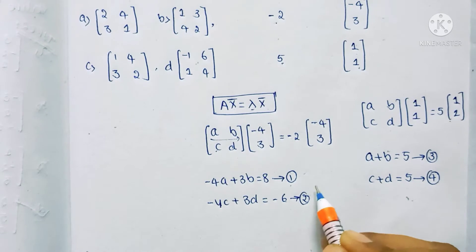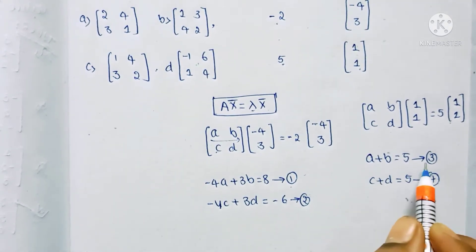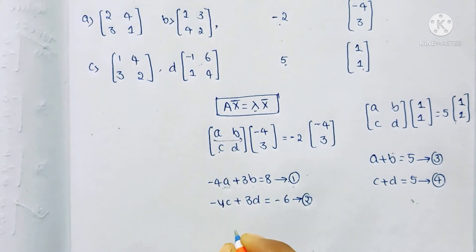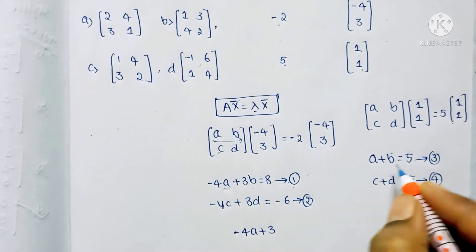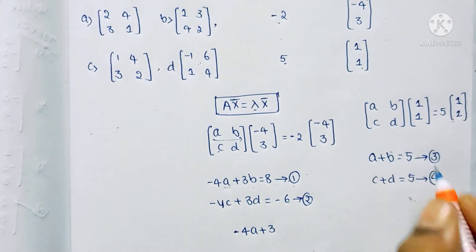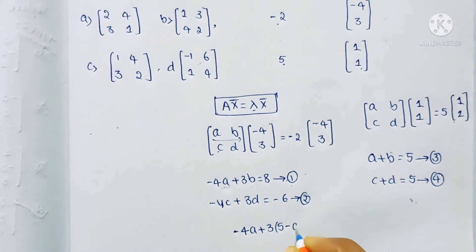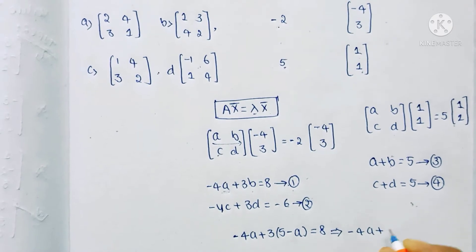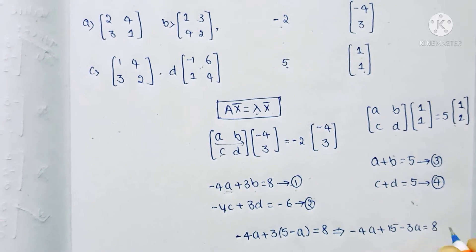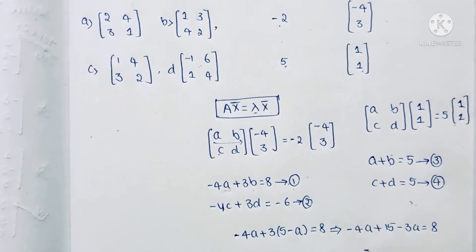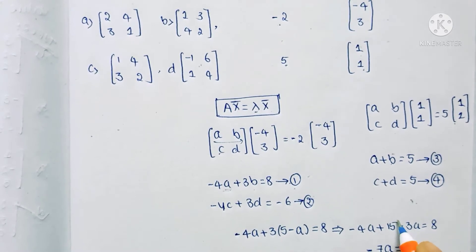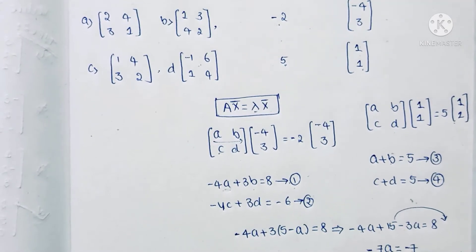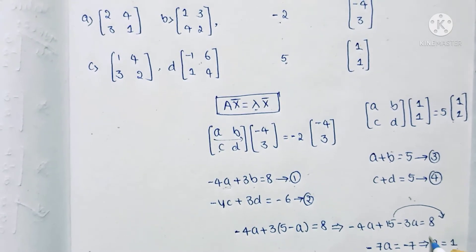We now have 4 equations. Substituting equation 3 into equation 1: from equation 3, b = 5 - a. Substituting: -4a + 3(5 - a) = 8, giving -4a + 15 - 3a = 8, so -7a = 8 - 15 = -7, therefore a = 1.